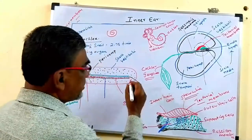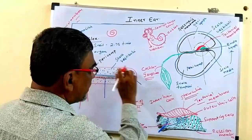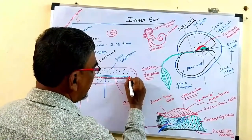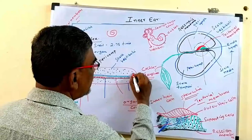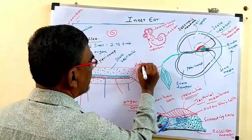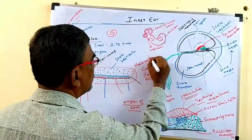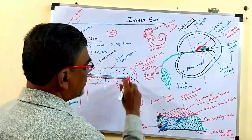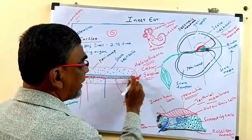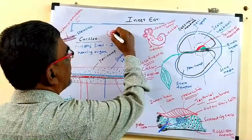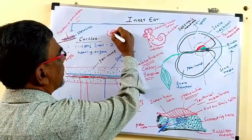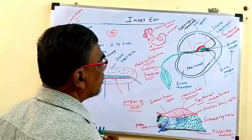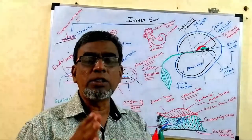One more important structure in the Cochlea: at the apical part — the end region — there is a structure called the Helicotrema. This is the apical part of the Cochlea where the Scala Vestibuli and Scala Tympani connect.